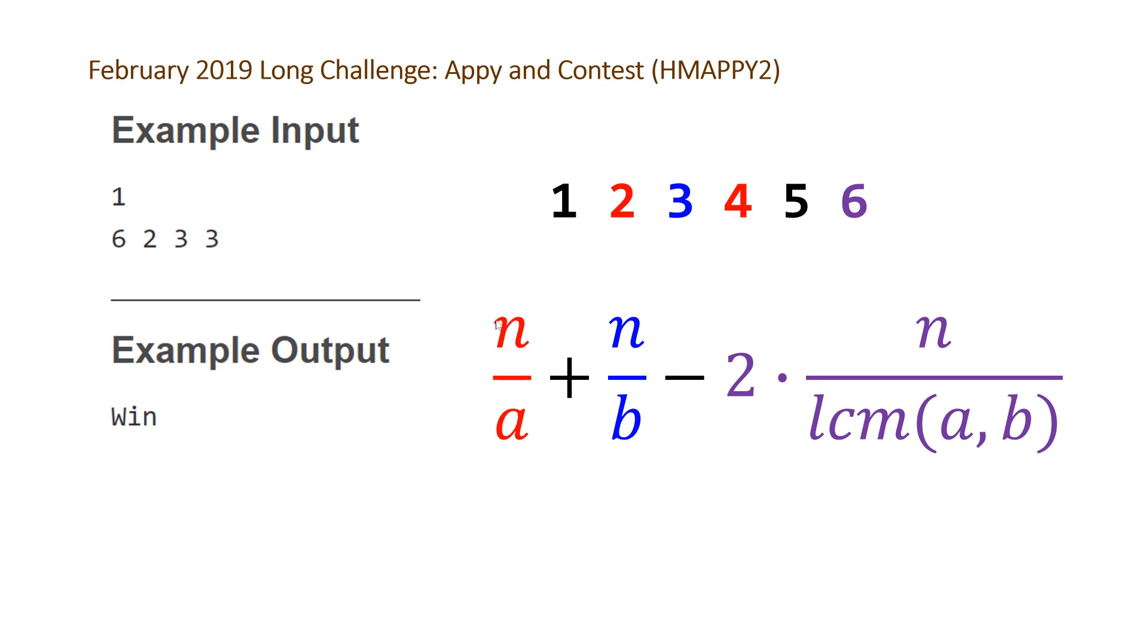So this is how you can visualize it. Red corresponds to n divided by A. Blue corresponds to n divided by B. And the purple ones are getting removed by subtracting 2. The reason why we have 2 here is because, like I said before, we need to subtract it once for it getting counted by red and once for it getting counted by blue here.